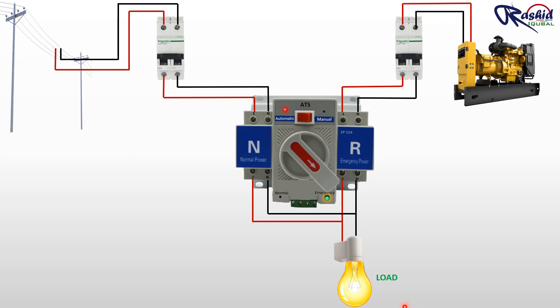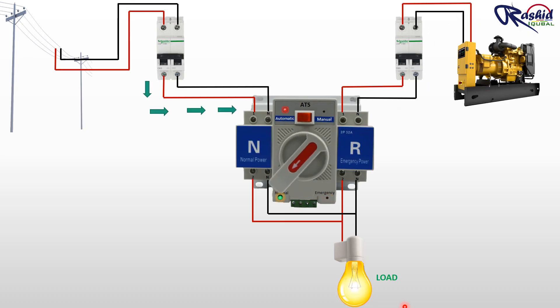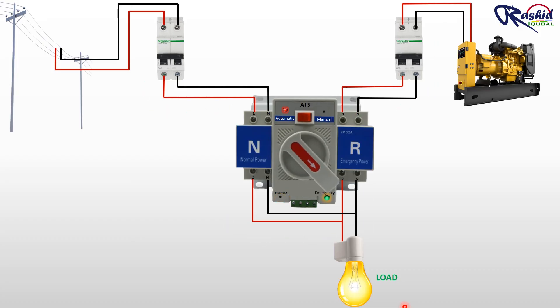After some time when the main power resumes from grid, the knob will move towards normal direction and the light will turn on. This bulb is getting electricity from the main grid. In case of again power cut from grid, the knob will move automatically towards emergency direction and then the light will turn on.